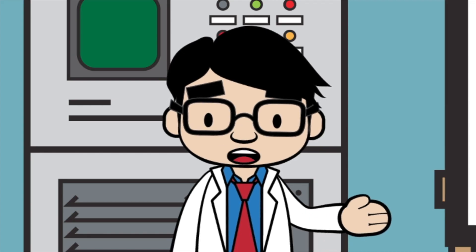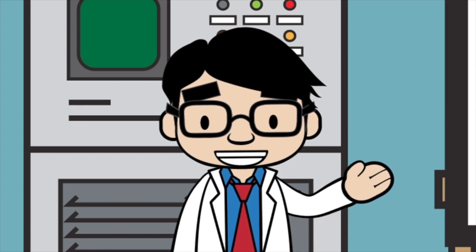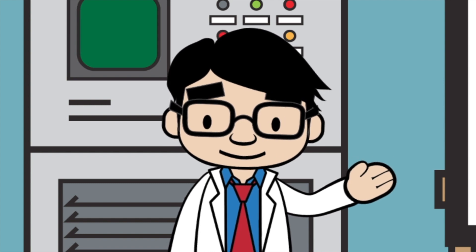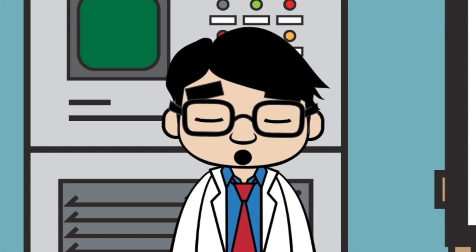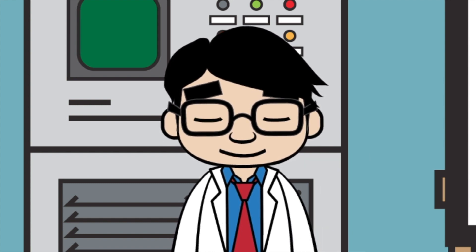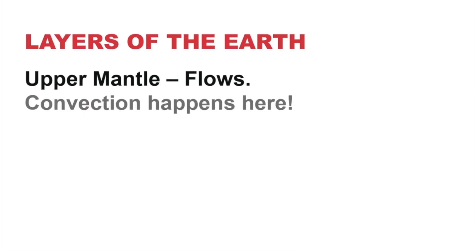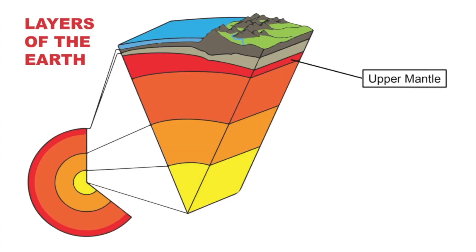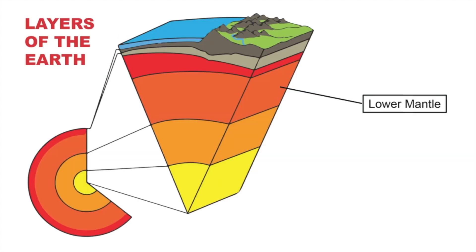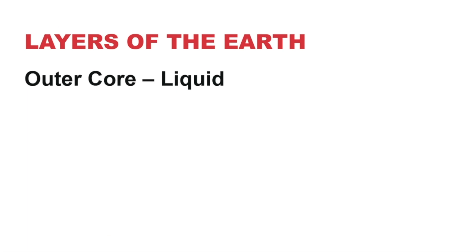Let's go over the layers of the earth. You have your crust, mantle, and core. The crust is super thin, and that's where we live. The upper mantle flows — convection happens here. The lower mantle is more rigid, while the outer core is liquid.